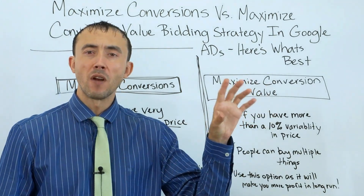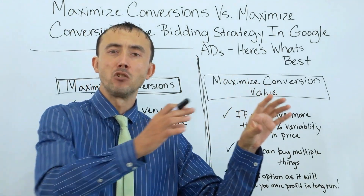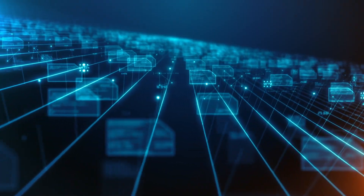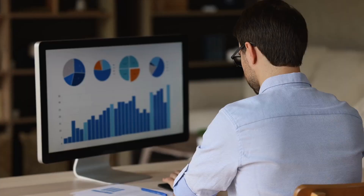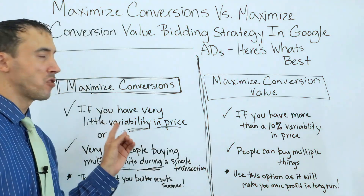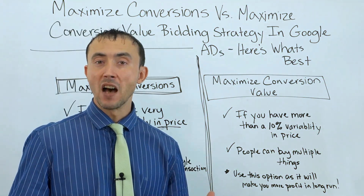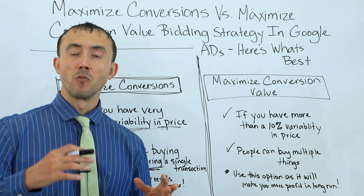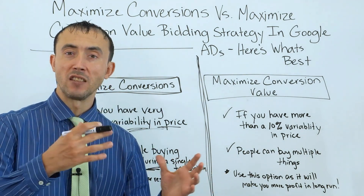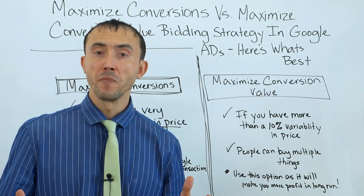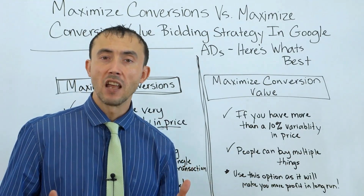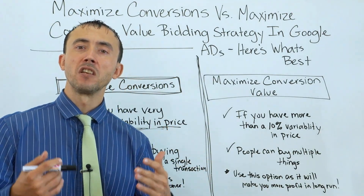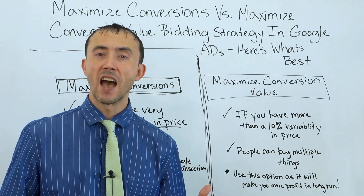Maximize conversion value bidding strategy looks at the revenue component of your conversions to decide if your ad should show up for somebody. With that bidding strategy, Google needs a lot of revenue data or lead value data in order to do its job properly. Whereas with maximize conversions bidding strategy, it doesn't need as much conversion data. So if there's not a big advantage of optimizing for revenue because almost every transaction is the same size, go with maximize conversions bidding strategy because it needs less data to get you to a benchmark of results.